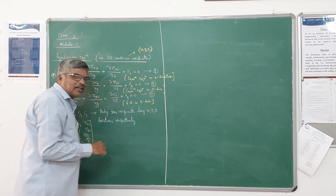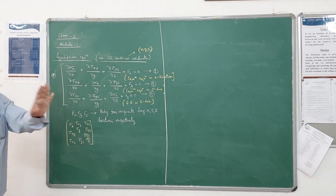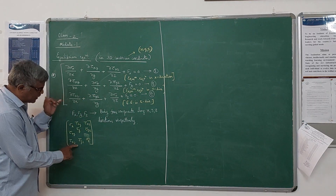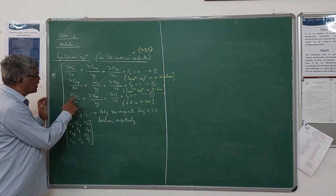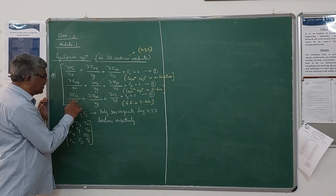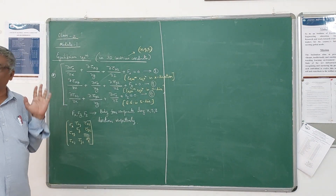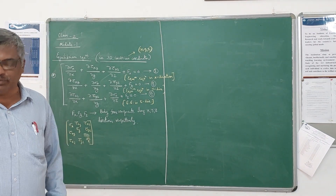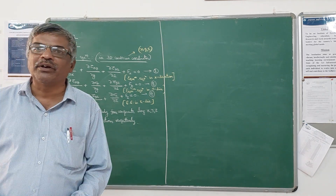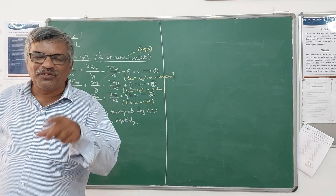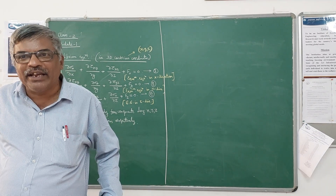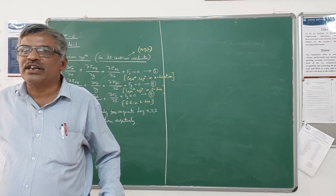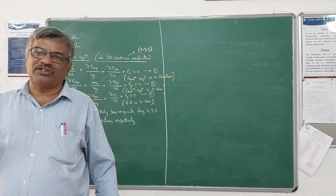In three dimensions there are three equations; in two dimensions there are two. The components tau XZ, tau YZ, and sigma Z appear in the third equation. The partial derivatives: if you are differentiating with respect to X, you treat Y and Z as constants; if differentiating with respect to Y, treat X and Z as constants; if differentiating with respect to Z, treat X and Y as constants.